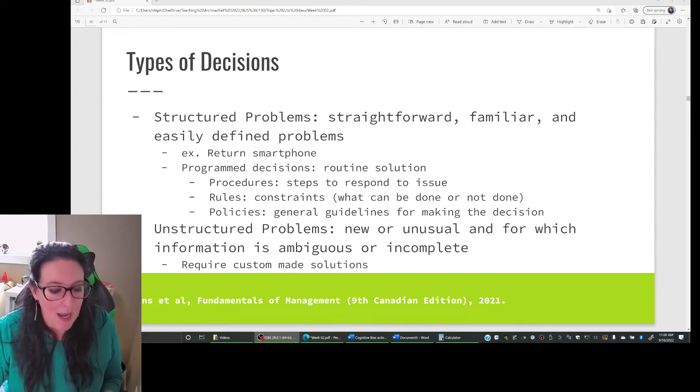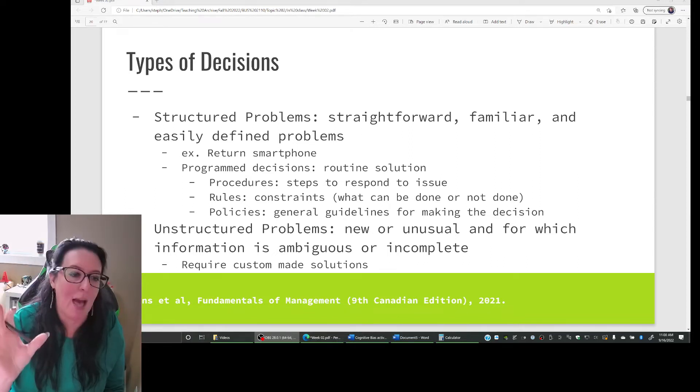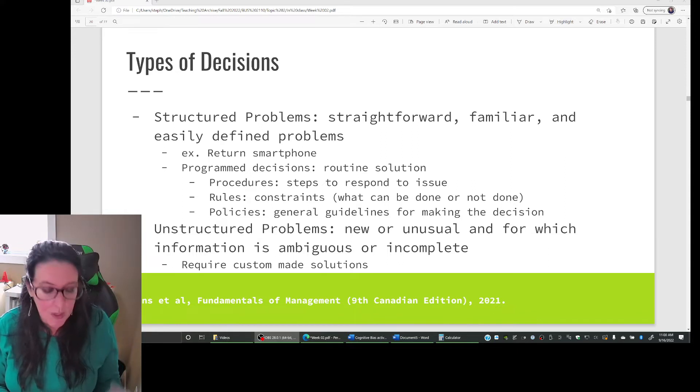We are continuing to look at the factors that affect decision-making. We looked in the previous video at the approaches to decision-making. So we looked at rational model, bounded rationality, and intuitive decision-making. Now we're going to look at types of decisions.